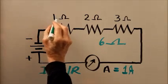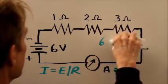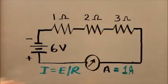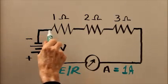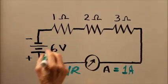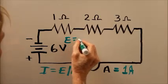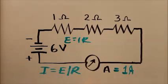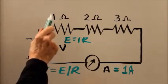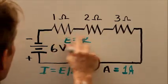So what's the voltage across this particular resistor? Remember, all we need to do is use Ohm's Law — voltage can only be defined across a component. The voltage E equals I times R. We already know I is 1 amp, so the voltage across this resistor is going to be 1 volt.